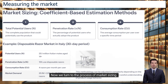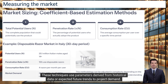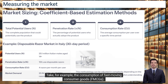Now we turn to the process of market sizing. One widely used approach involves applying coefficient-based estimation methods. These techniques use parameters derived from historical data or expected future trends to project demand. Such coefficients are often technical in nature and reflect accumulated industry knowledge. Take, for example, the consumption of fast-moving consumer goods, FMCGs.